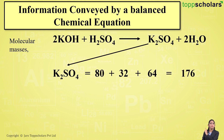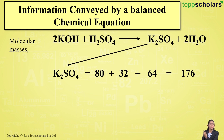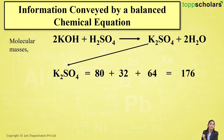Now for potassium sulfate: it is made up of potassium, sulfur, and oxygen. There are 2 atoms of potassium with atomic mass 40 each, giving 80; plus atomic mass of sulfur, which is 32; plus 4 atoms of oxygen with atomic mass 16 each, giving 64. When you sum up the atomic masses, the molecular mass of potassium sulfate comes out to be 176.